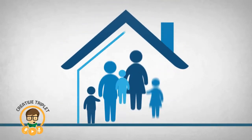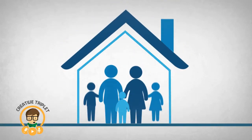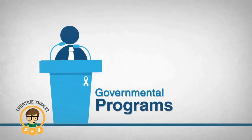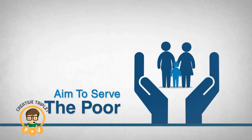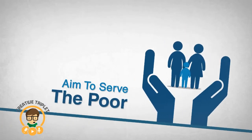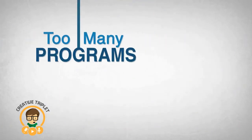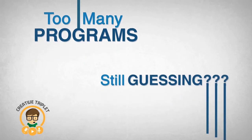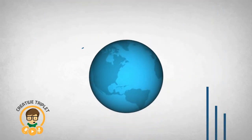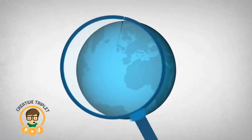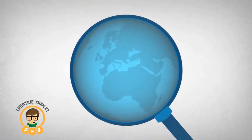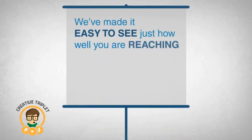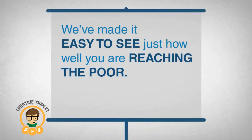Many social service organizations and governmental programs aim to serve the poor. But too many programs are still guessing at just how well they're doing that. In an environment with growing emphasis on evidence for program decision-making, we've made it easy to see just how well you are reaching the poor.